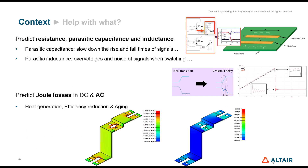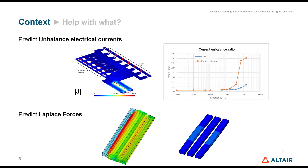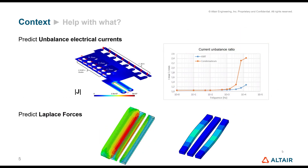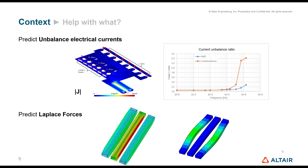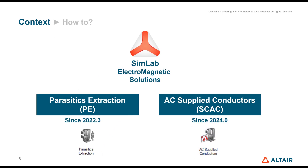What we can do with this solver is on one side predict and compute all these parasitic behaviors - get their impedance and extract them. The second part is to supply the device where we can predict all the joule losses, DC and AC losses, predict where the current is going inside the busbars, and predict all these forces. Knowing that, we can then couple these results to other multi-physics behavior. We have two applications: parasitic extraction, and AC supply conductor, which we're going to focus on today.